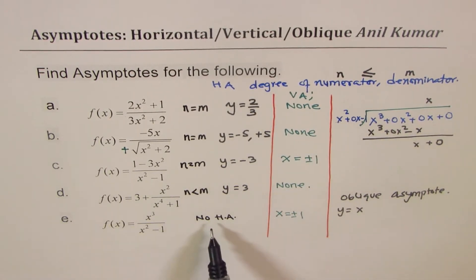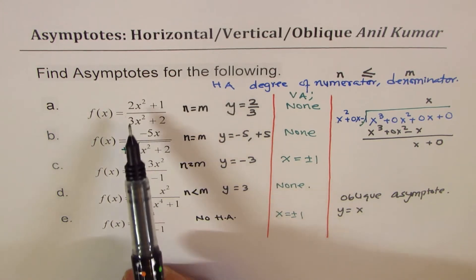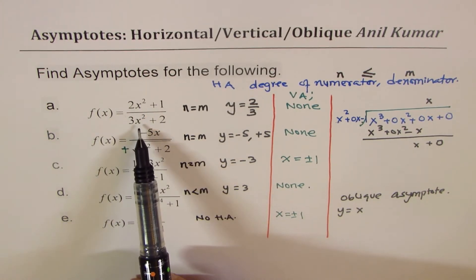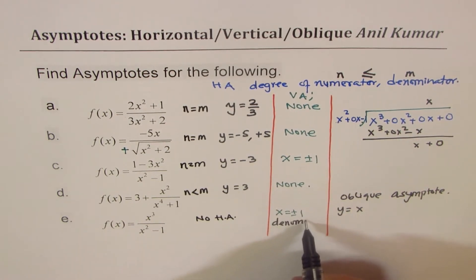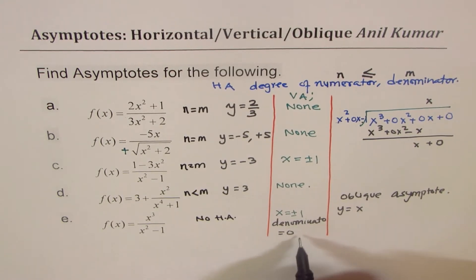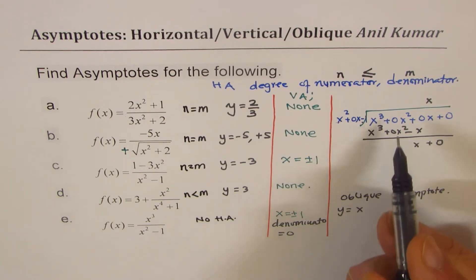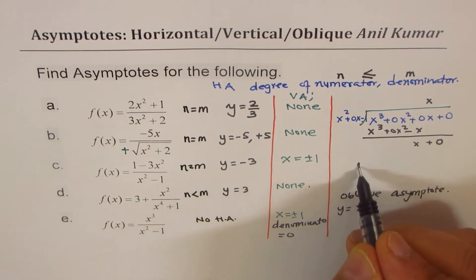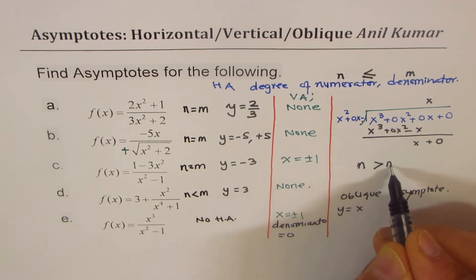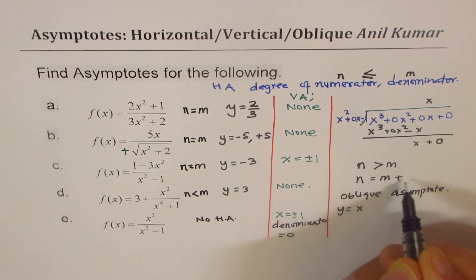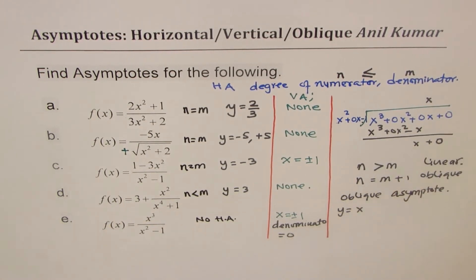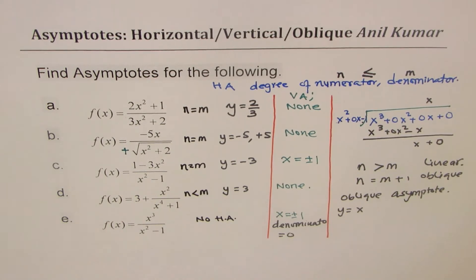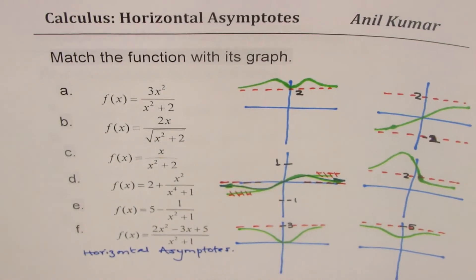To summarize: for horizontal asymptotes, degree of numerator must be less than or equal to the denominator. For vertical asymptotes, equate the denominator to 0. For oblique asymptotes, the degree of numerator n is greater than m — specifically n equals m plus 1 to get a linear oblique asymptote. Now let's get back to our original question, which is to match the graphs to the given equations.